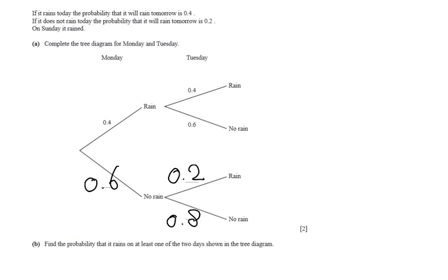Okay, so that was the first question for two points. And then it continues - again I believe this is a two or perhaps even a three point question. It says: find the probability that it rains on at least one of the two days shown in the tree diagram.